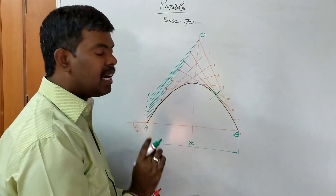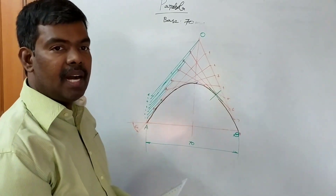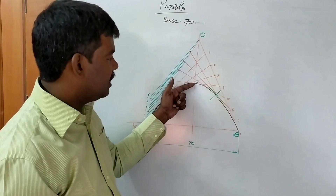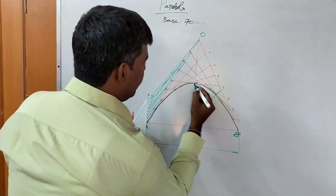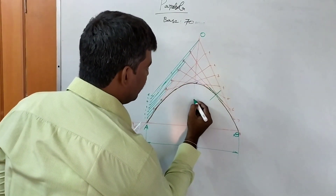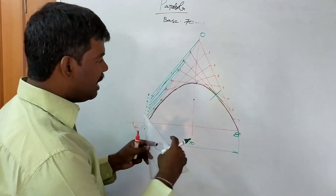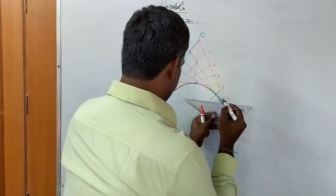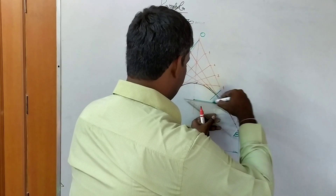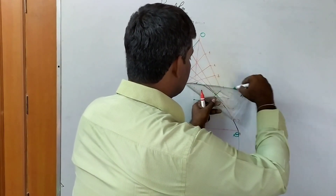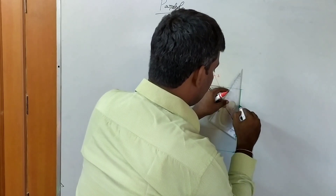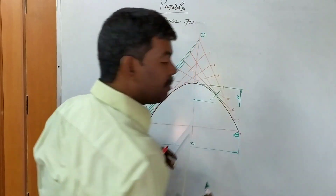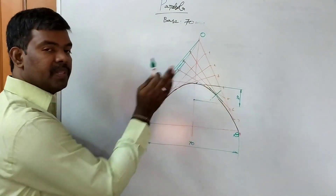Specifically, if the problem says draw tangent and normal at a distance of 30 mm from the vertex, you locate that point on the axis. From vertex V, measure 30 mm to point S. Then draw a horizontal line from S either to the left or right side, as the problem specifies.